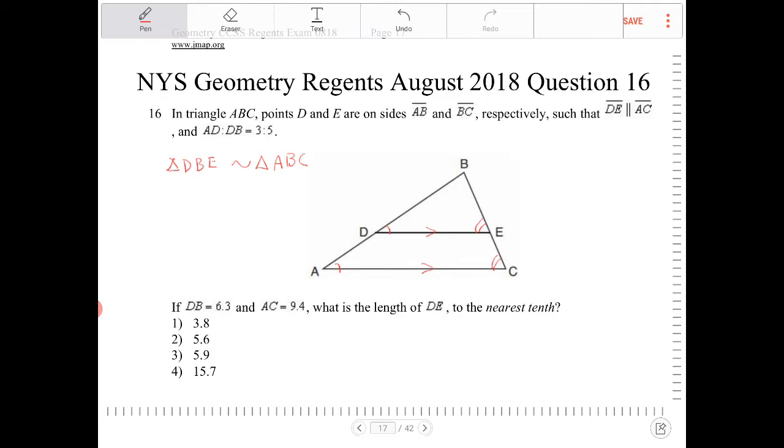I don't know what side length AD is, so I'm going to call this side length AD 3N, and I don't know what side length DB is, so I'm going to call that 5N to maintain that ratio, 3N to 5N, 3 to 5.